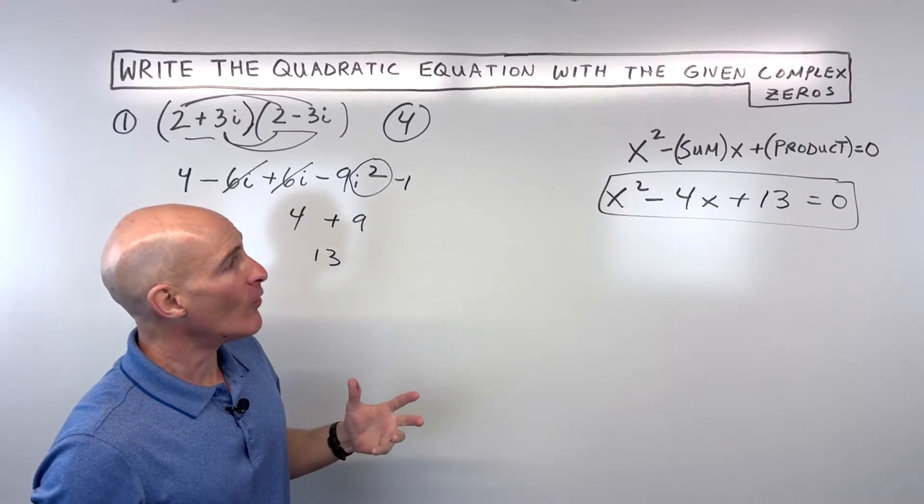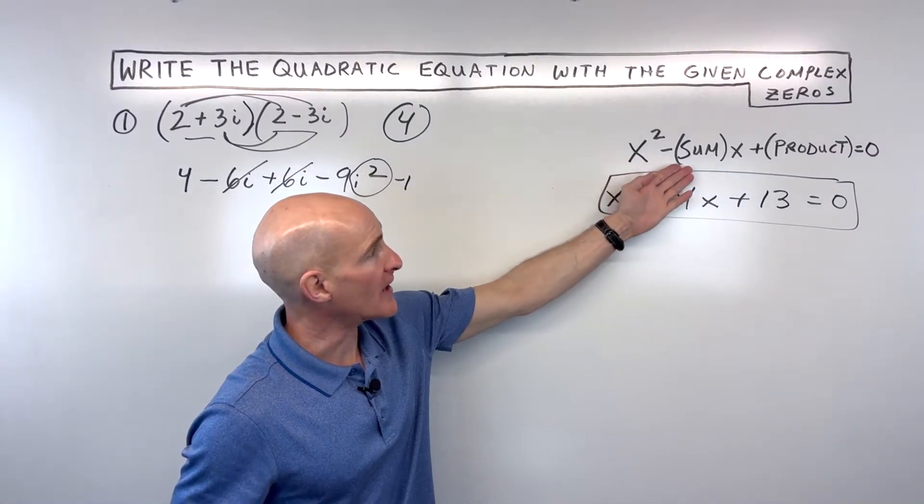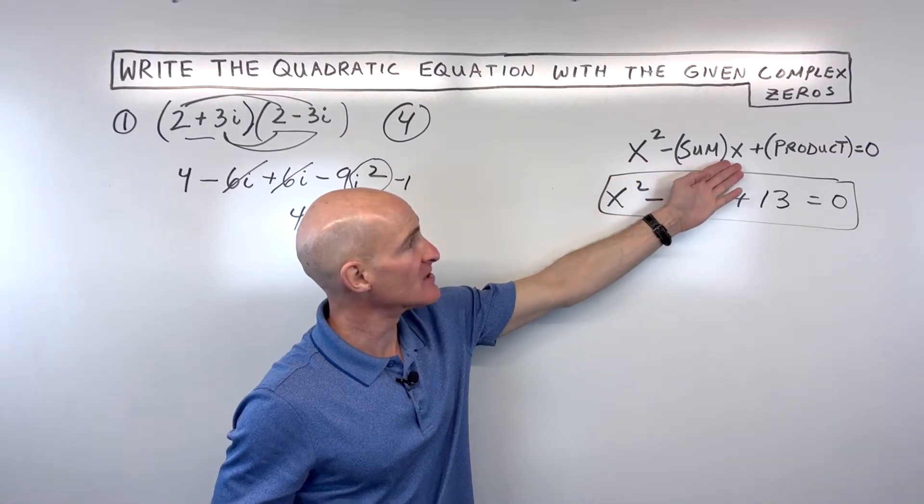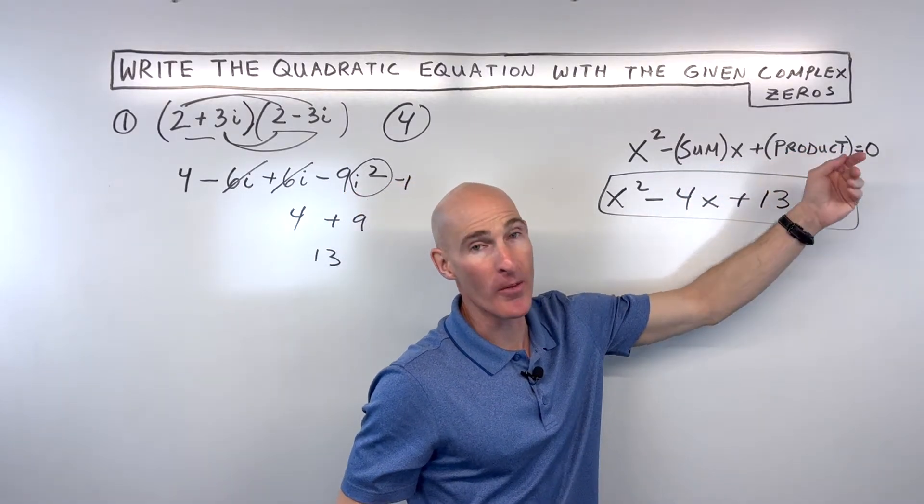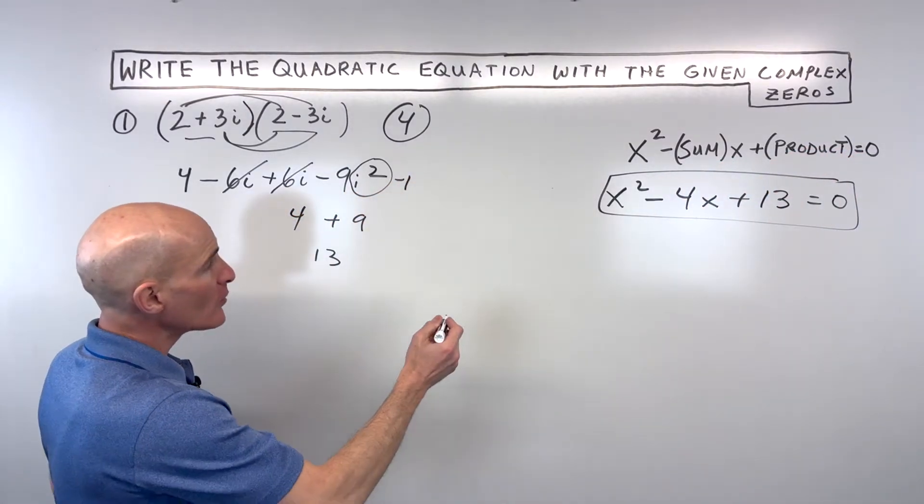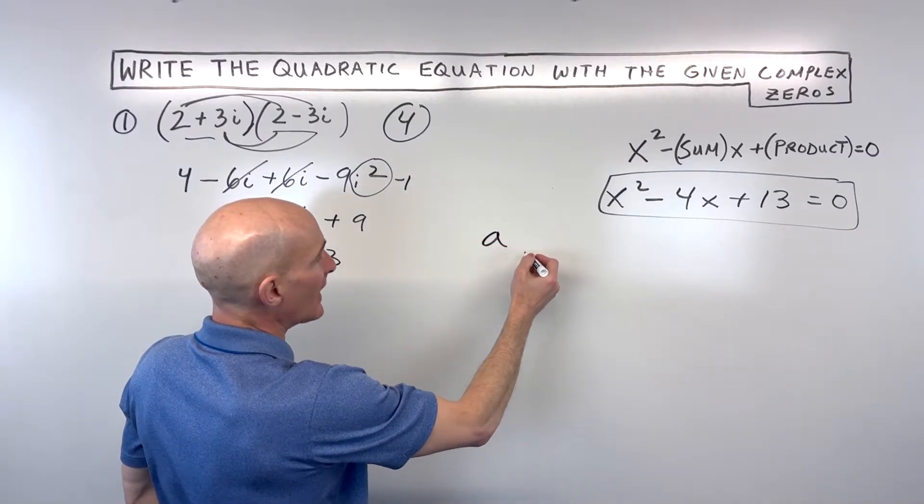Now you might be saying, Mario, why does this formula work? x squared minus the sum of the zeros times x plus the product of the zeros equals zero. Well, we know that if you say, for example, your zeros are like a and b.